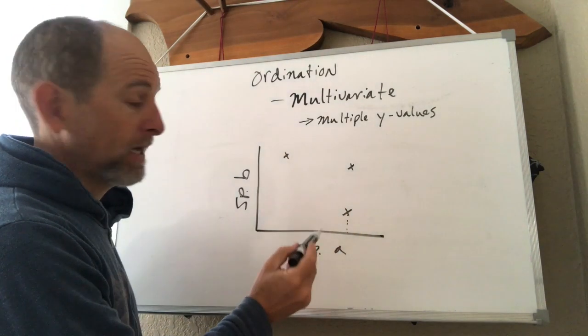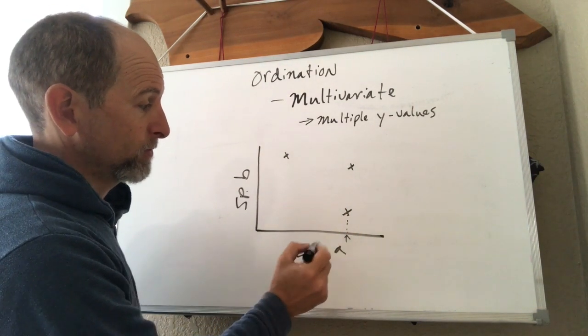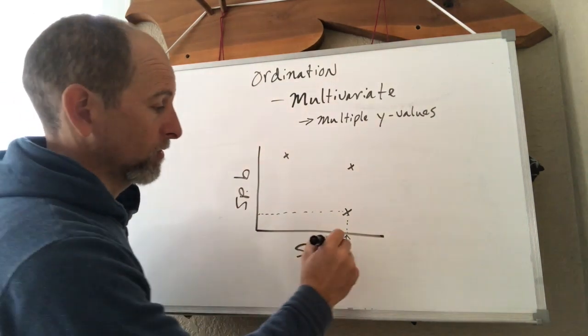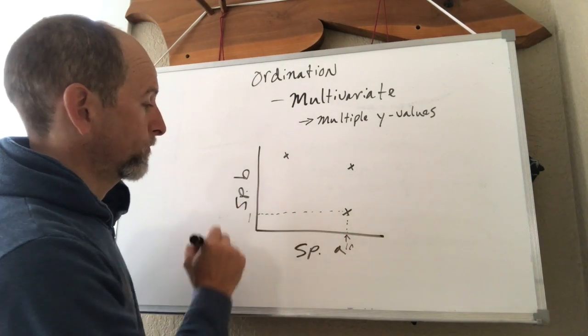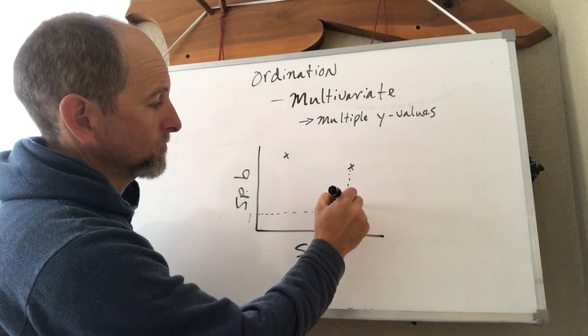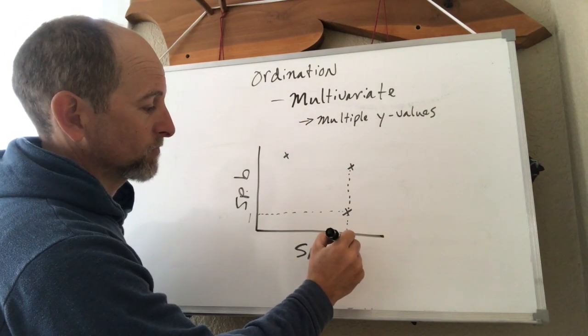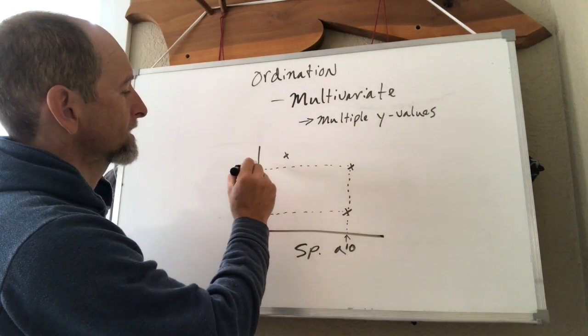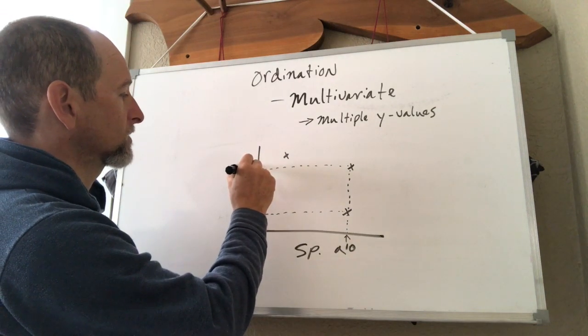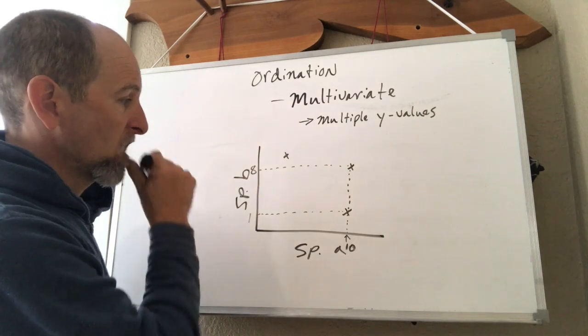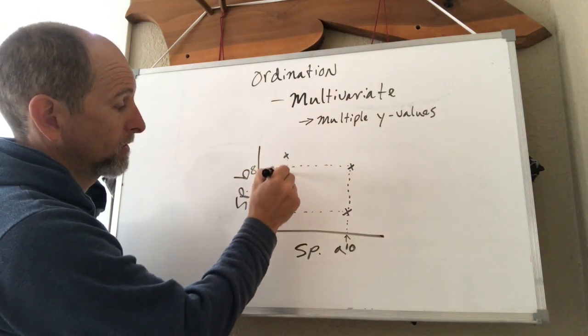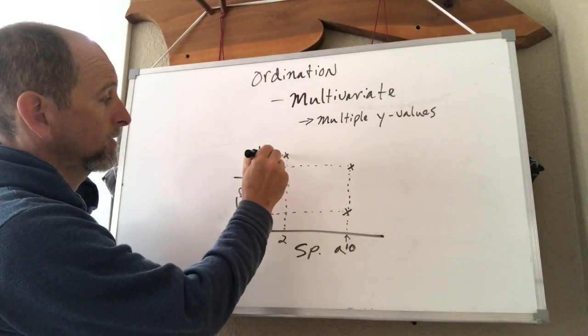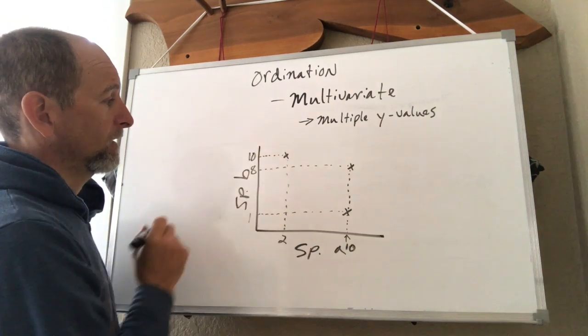This community here has this amount of species A and this amount of species B. So if this was 10, this might be one. This community also has 10 species A, if that's what that mark on the x-axis is. But then on the y-axis, they have more species B. Let's call that something like eight. Finally, this sample here has a small amount of species A. Let's say it's around two. And a larger amount of species B.